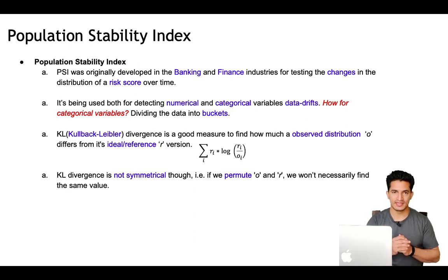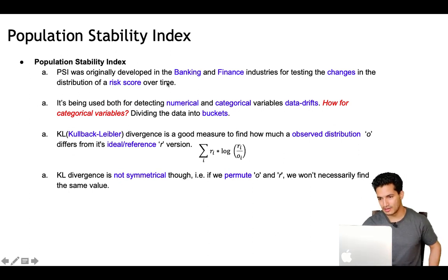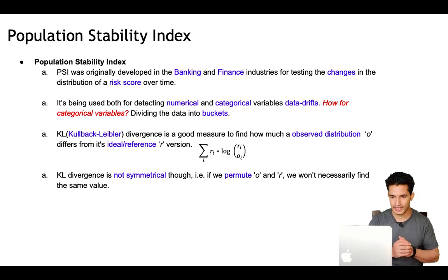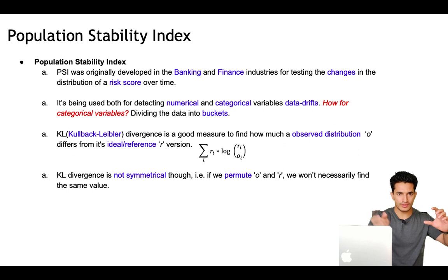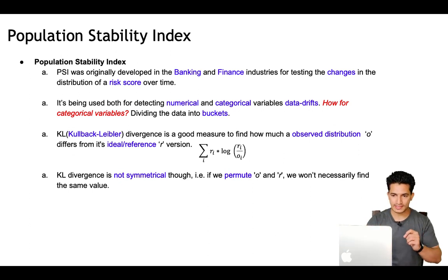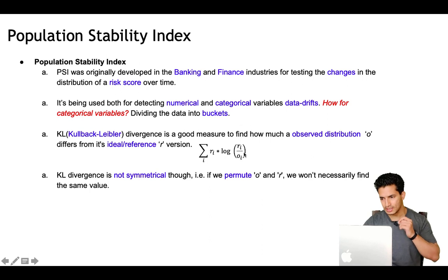The next method to detect data drift is Population Stability Index, also known as PSI. PSI is not a statistical test, but it is a widely accepted threshold across industries. It was originally developed in banking and finance for testing changes in the distribution of risk scores over time. It can be used for detecting both numerical and categorical variable data drift. For categorical variables, you get the proportion of data belonging to each bucket and run numerical methods on those proportions. The idea of PSI is inspired from KL divergence — Kullback-Leibler divergence — which is a good measure to find how much an observed distribution differs from a reference distribution.